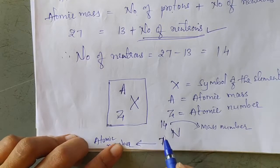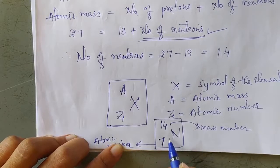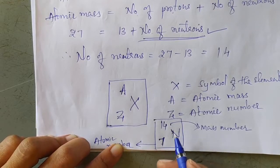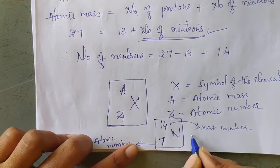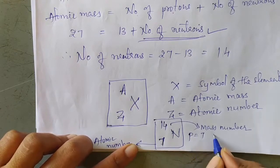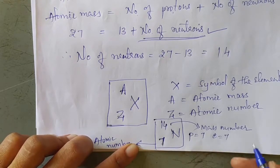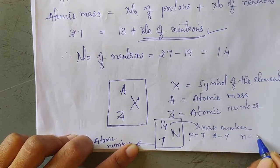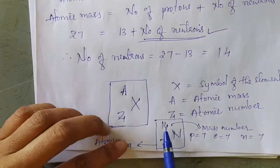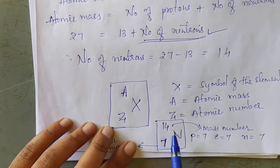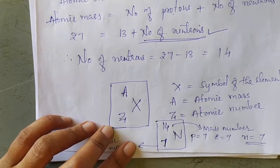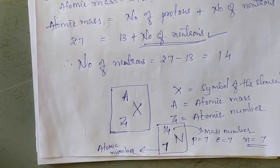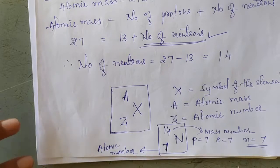If we have this notation, we can calculate the number of protons, neutrons, and electrons. Here, number of protons is 7 and number of electrons is also 7. Number of neutrons = atomic mass minus number of protons = 14 minus 7 = 7. So like this, we can calculate the number of protons, electrons, and neutrons. It is very important to remember the atomic number and atomic mass.